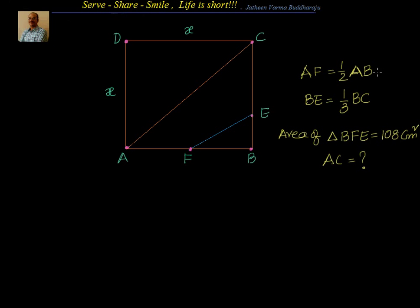Now what will be AF? AF will be half of AB, that will be nothing but equal to X by 2. If AF is X by 2, what will be BF? AF equal to FB is equal to half of AB, which is nothing but equal to half of X. So that's equal to X by 2.